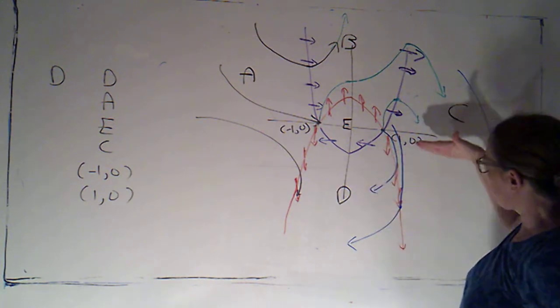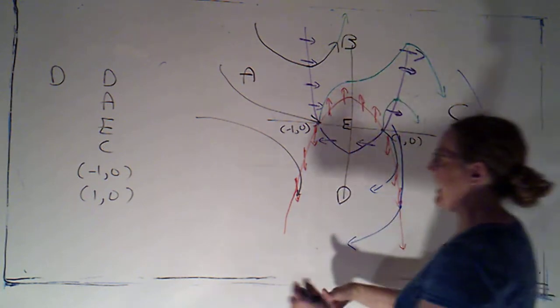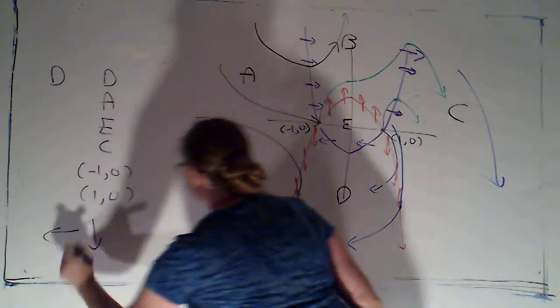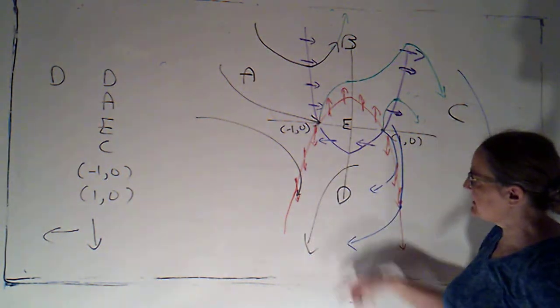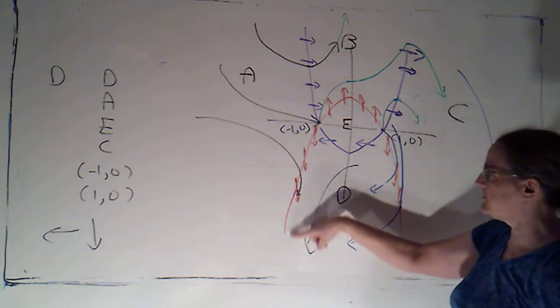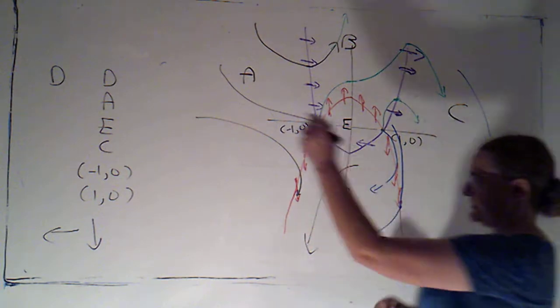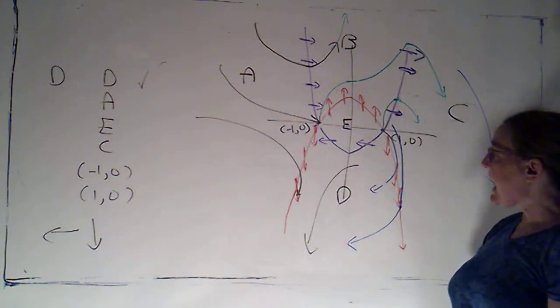So, if we're in D, we're going left and down. Could I be in D and continue going left and down and stay in D? Yeah, just go down fast enough that you don't run into that parabola. So, that works. Could I pass into A?